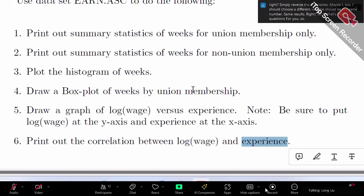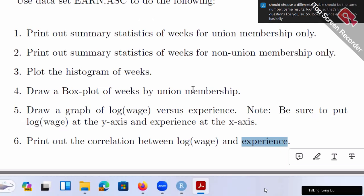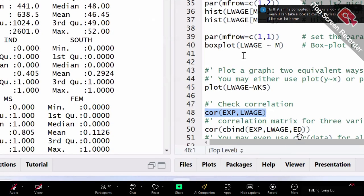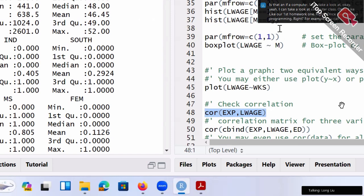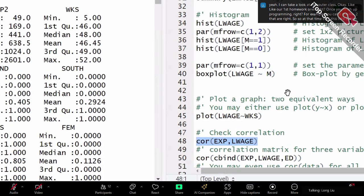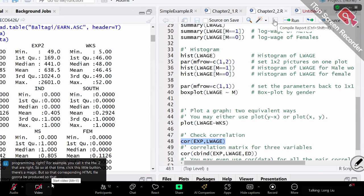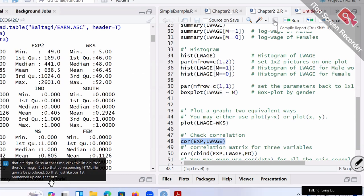So sounds easy. So basically, try my sample codes and replace some variable name. You should get the results. Any questions? First, the homework. Once you finish your programming, for example, you call it hw2.r. So at that time, click this little button, this magic button, so that corresponding HTML file is going to be produced. So that, just like our first homework, upload that HTML. If you want to produce a PDF, that's perfect. That's totally fine. But HTML should be a safe one. So if you have any other questions?